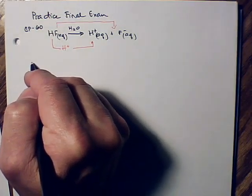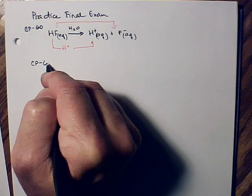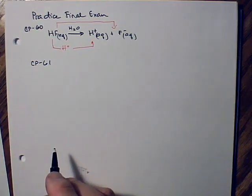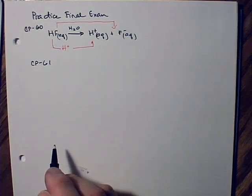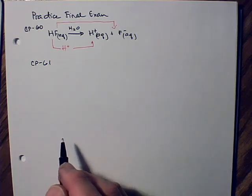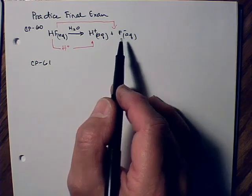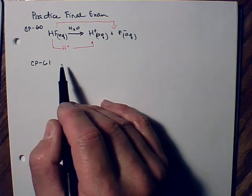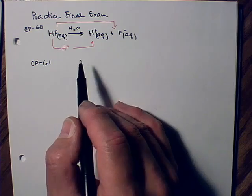On the CP practice final exam, question number 61 asks, or directs you to write a Bronsted-Lowry dissociation equation for hydrofluoric acid. 60 was Arrhenius. 61 is asking about how you do the same thing in the Bronsted-Lowry theory.